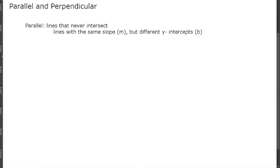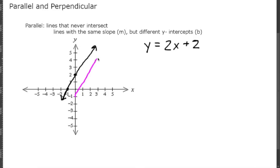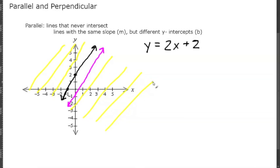That happens when the lines have the same slope but different y-intercept values. Let's look at this visually. If we have the equation y equals 2x plus 2, a line that runs parallel to that will look like this. These two lines are never going to cross paths. When you think of parallel lines, think of the center lines on a road. Not only is this purple line a parallel line, but so is this yellow one and this one and so on, so there are infinitely many parallel lines to this equation.